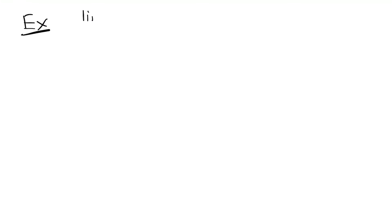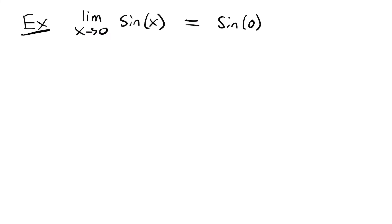Now let's quickly look at what happens when we take the limit of a trigonometric function. We'll look at the limit as x approaches 0 for the function sine of x. Plugging in 0, we have sine of 0, which we know to be 0. We'll look at more complex trigonometric limits in a future lesson, as they do get a lot more complicated with methods you'll have to learn.